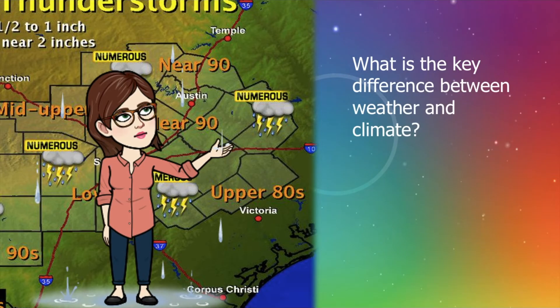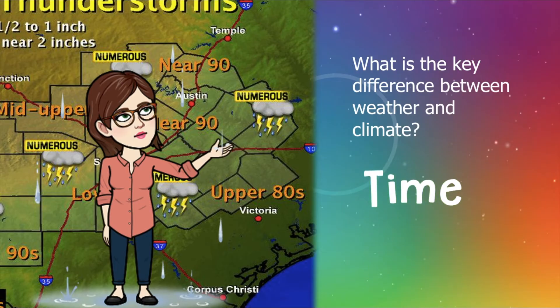So what is the key difference between weather and climate? The key difference between weather and climate is time. Climate is over a long period of time, usually around 30 years.